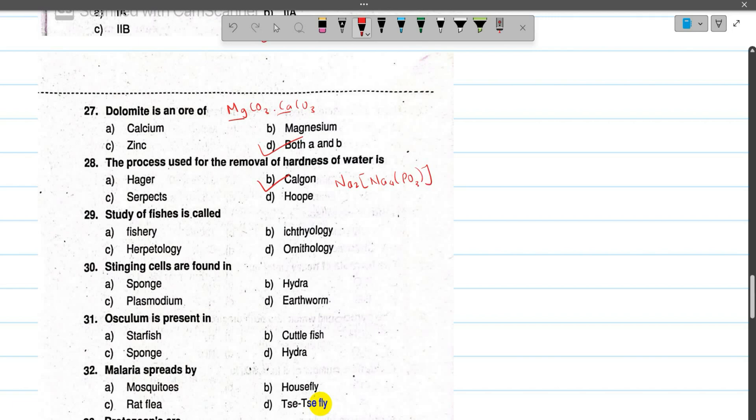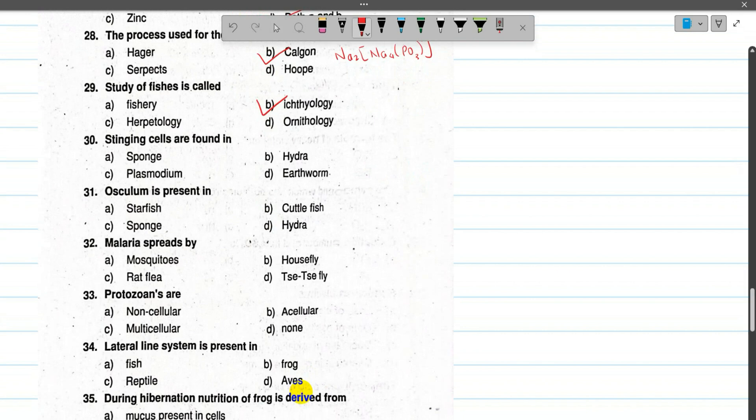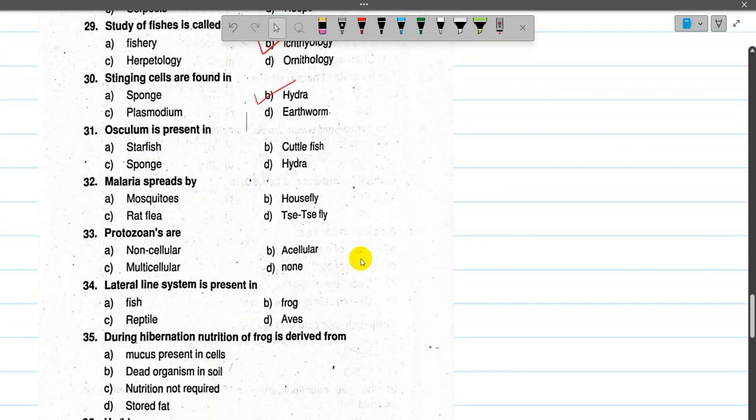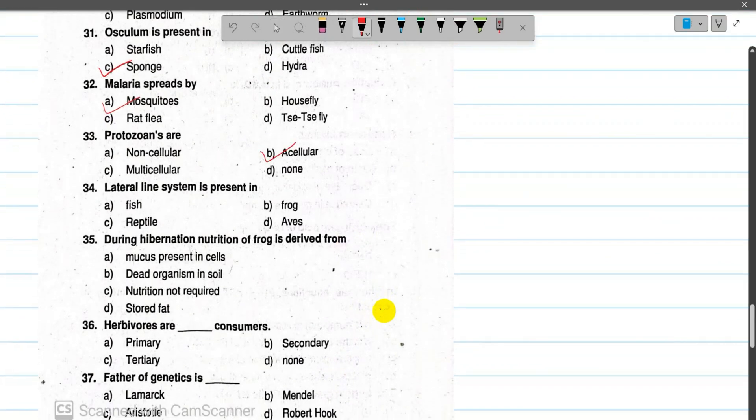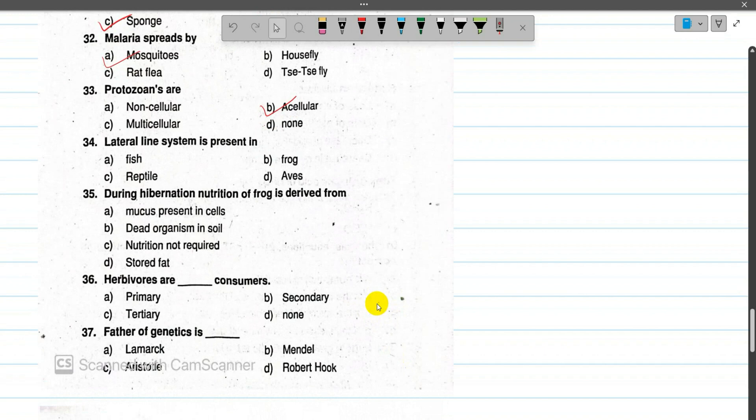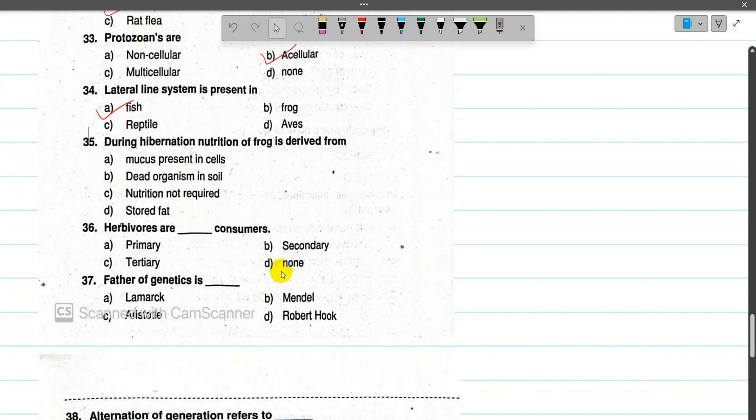Number 29: The study of fish is called ichthyology. Number 30: Stinging cells are found in hydra. Number 31: Osculum is present in sponges, it is a large cavity in porifera. Number 32: Malaria spreads by mosquitoes. Number 33: Protozoans are acellular, made up of only one cell. Number 34: Lateral line system is present in aquatic animals, especially fishes. Number 35: During hibernation, nutrition of a frog is derived from stored fat. Fat is utilized during hibernation.